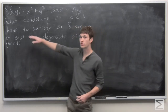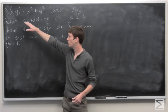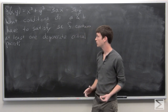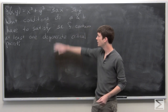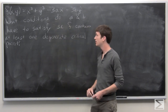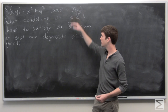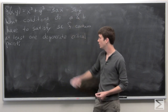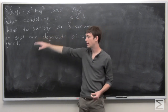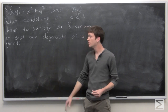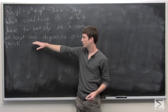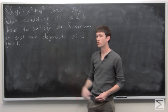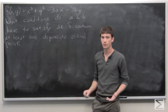In this problem, we're given a function f of x, y is equal to x cubed plus y cubed minus 3a times x minus 3b times y. We want to find conditions in which a and b allow f to produce at least one degenerate critical point, maybe more.